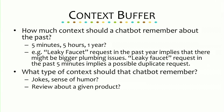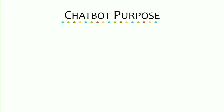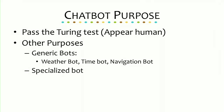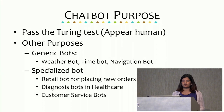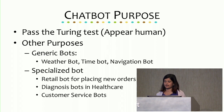What type of context should we remember? Time is one. Jokes and sense of humor — probably not. Reviews about given products — maybe. What's the purpose of the chatbot? There are generic bots that tell you the weather, the time, or navigate from location A to B. And then there are specialized bots that are few and far between — like a retail bot for placing orders, a healthcare bot, or customer service bots, which are coming up significantly in many different areas.